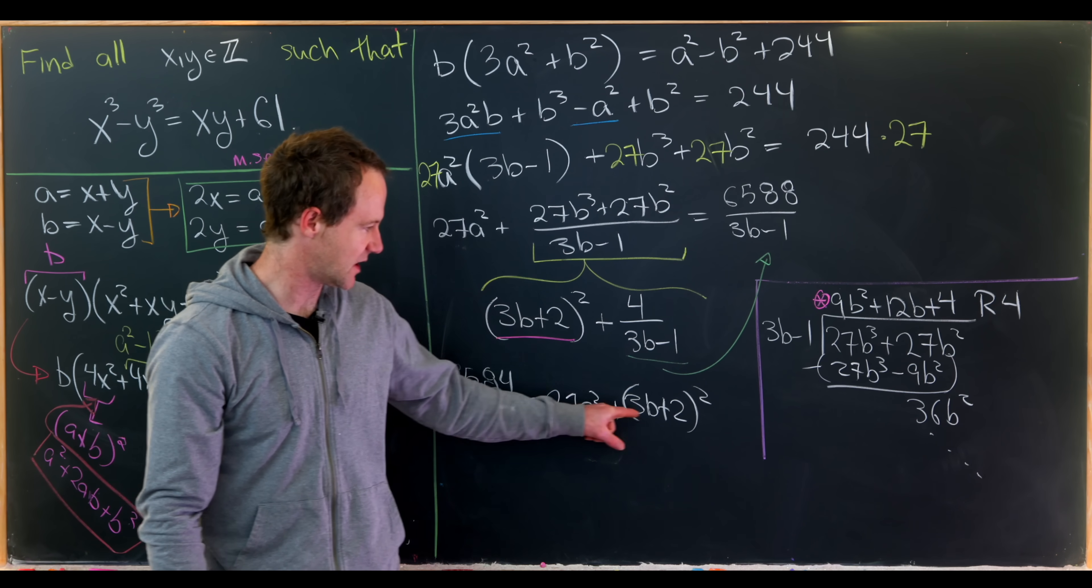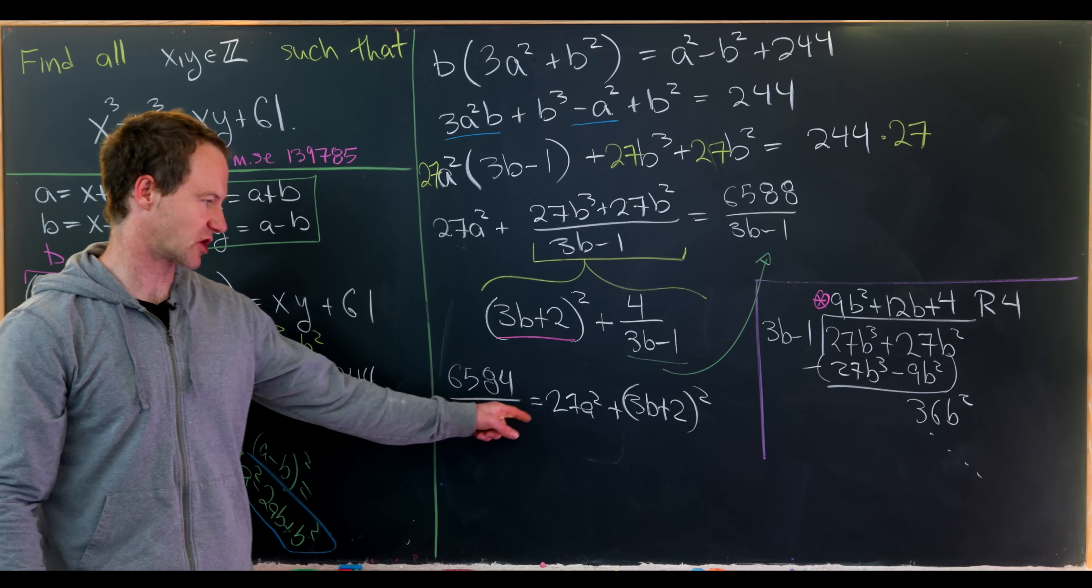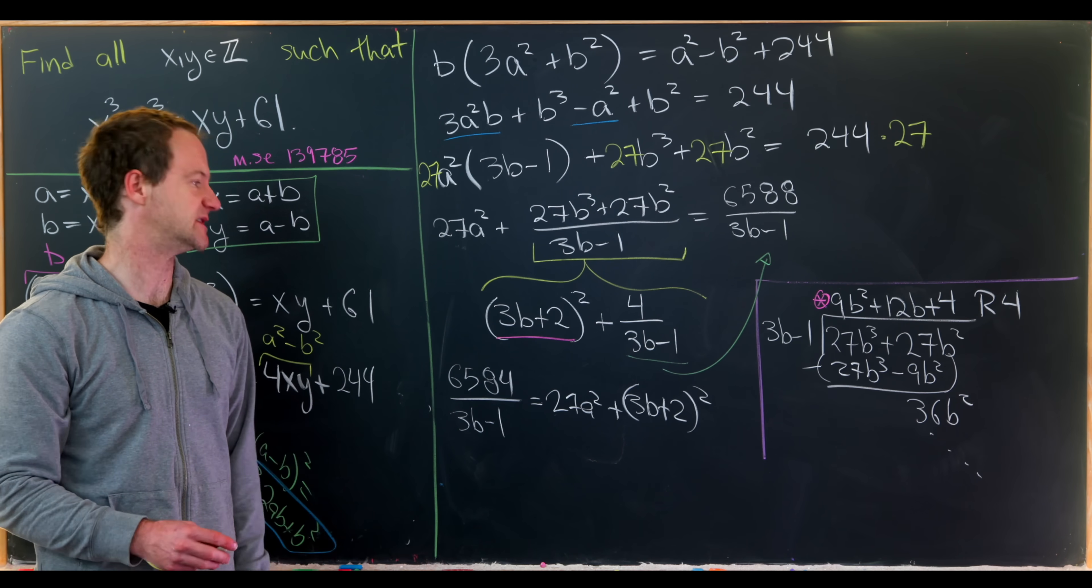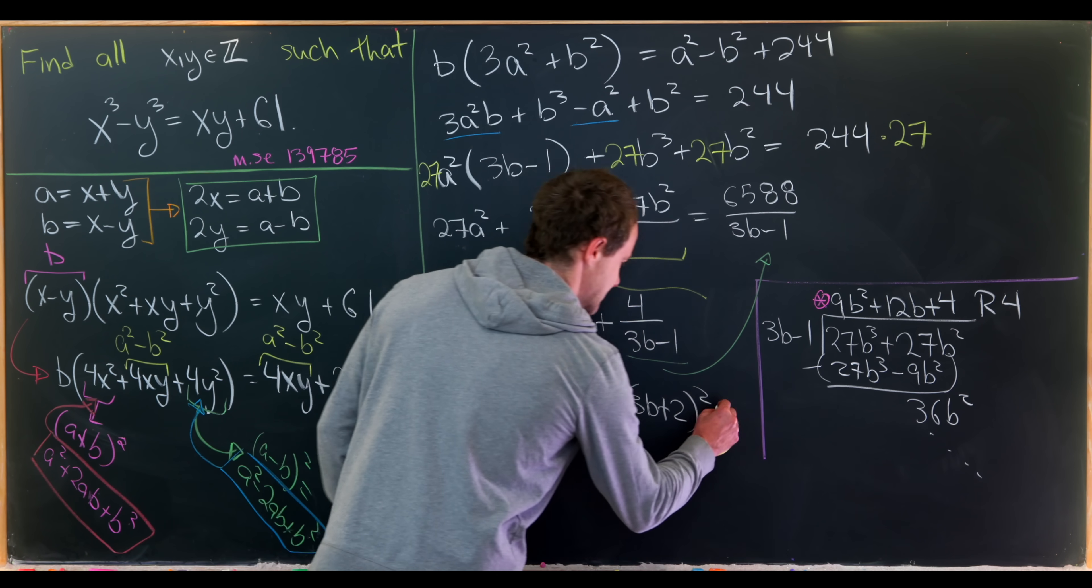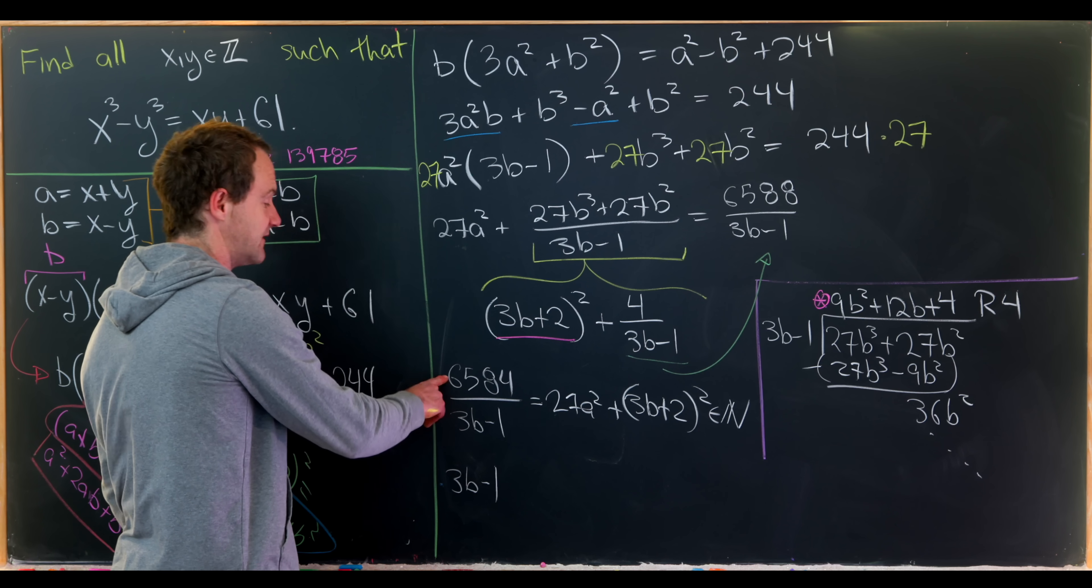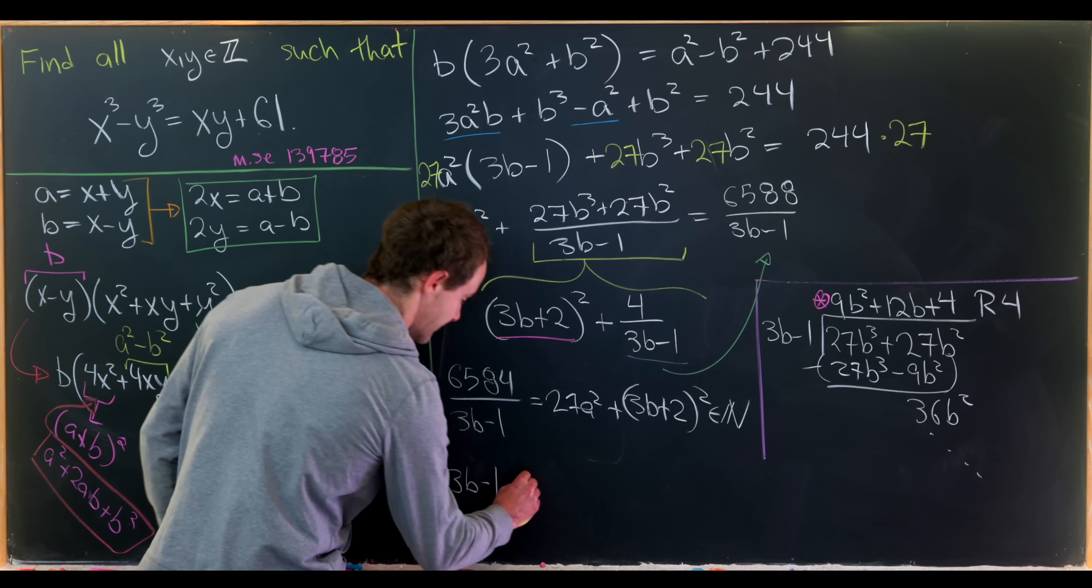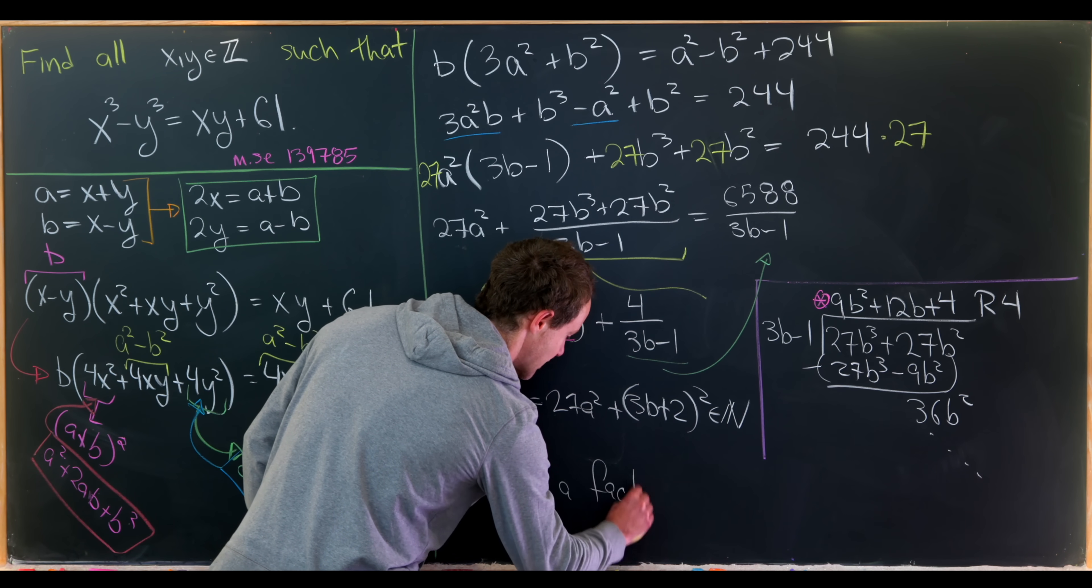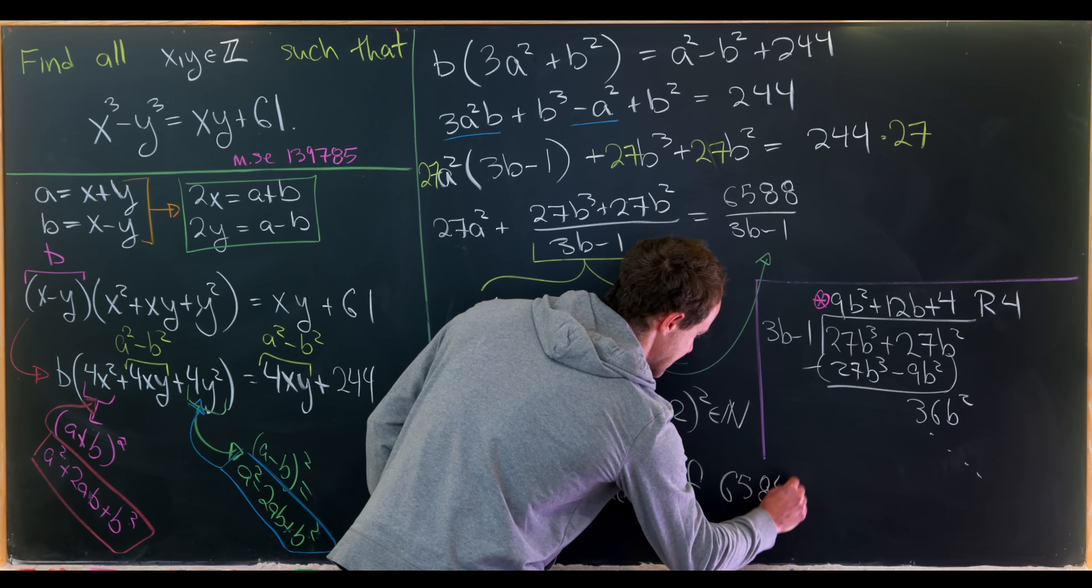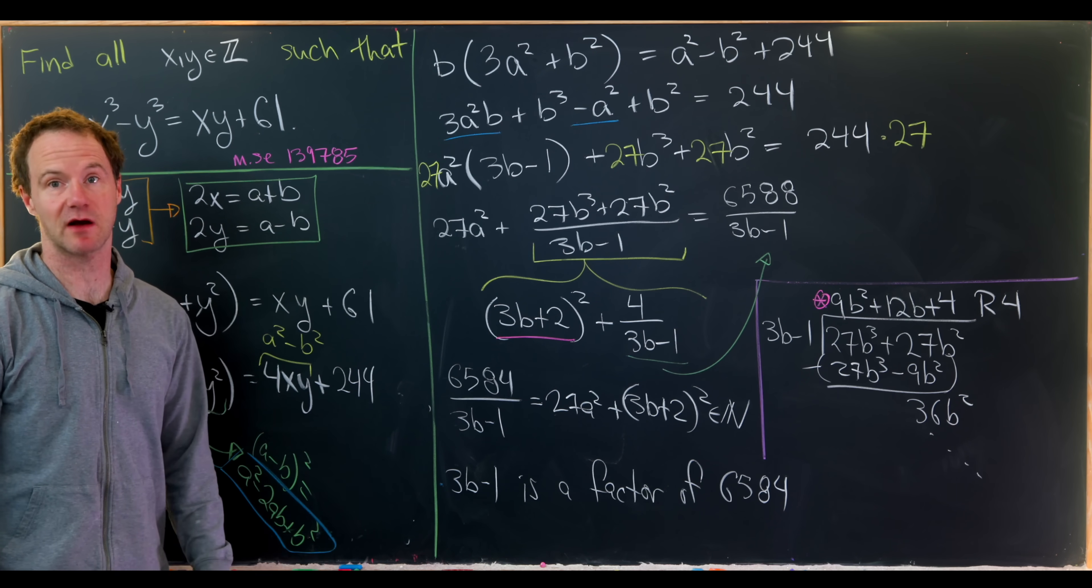Let's notice that this is most definitely a positive integer just given its structure of having these perfect squares, and this 3b plus 2 here can't even be 0. So that means this is a natural number. That means this 3b minus 1 must divide evenly into 6584. In other words it is a factor of 6584. Let's keep that in mind as we finish this problem.